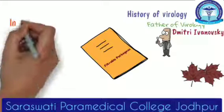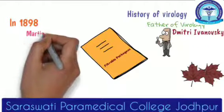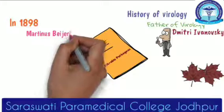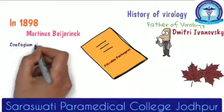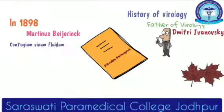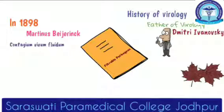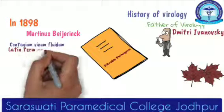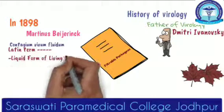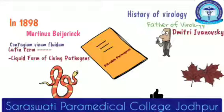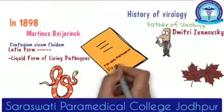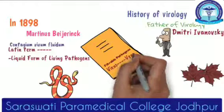In 1898, Martinus Beijerinck said that the filtrate pathogen grows only inside the cell. So this is not a toxin. And he named it contagium vivum fluid, which is a Latin term, and the meaning of this term is 'liquid form of living pathogen.' As venom is also in liquid form, thus Martinus reintroduced a term called virus, which means venom or poison.